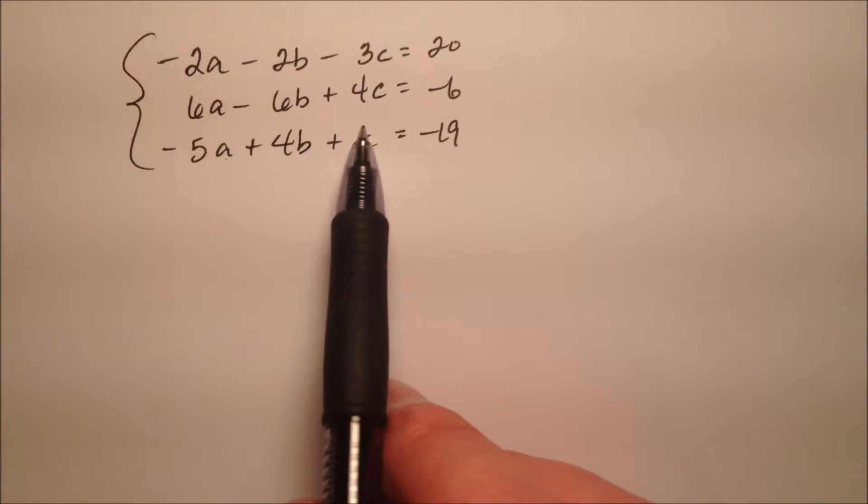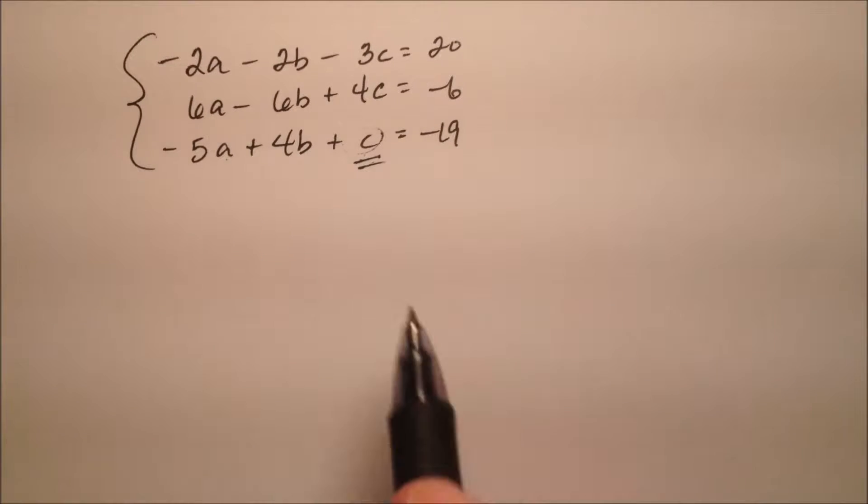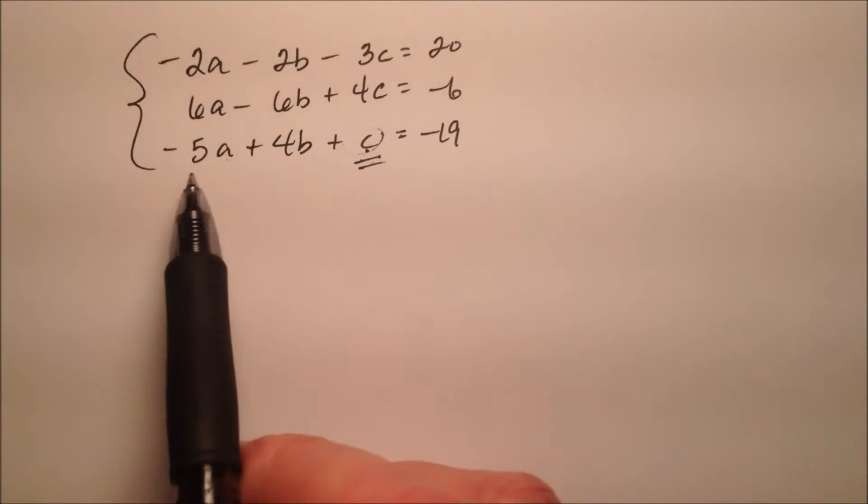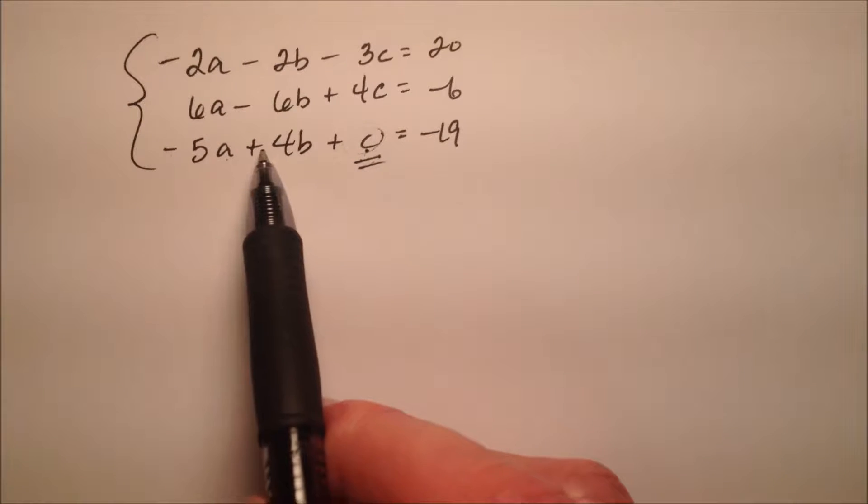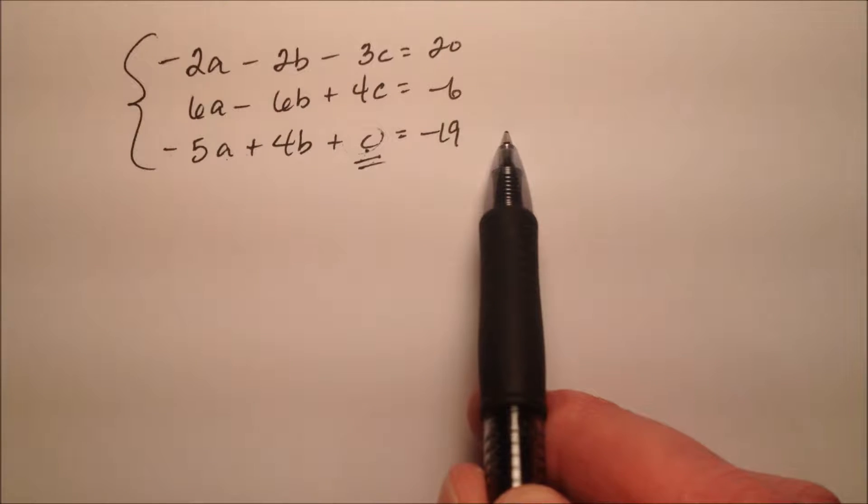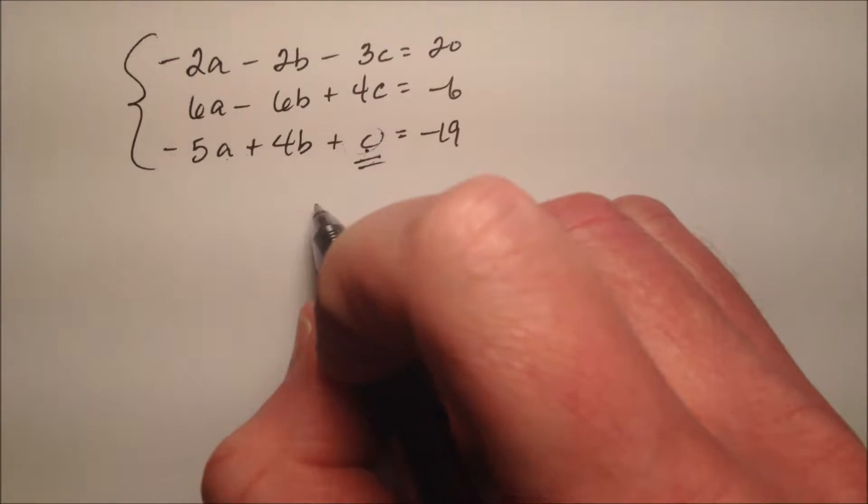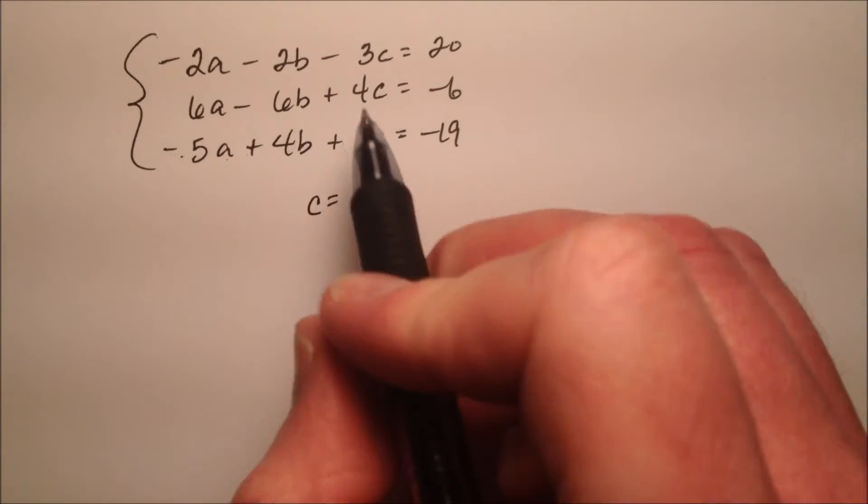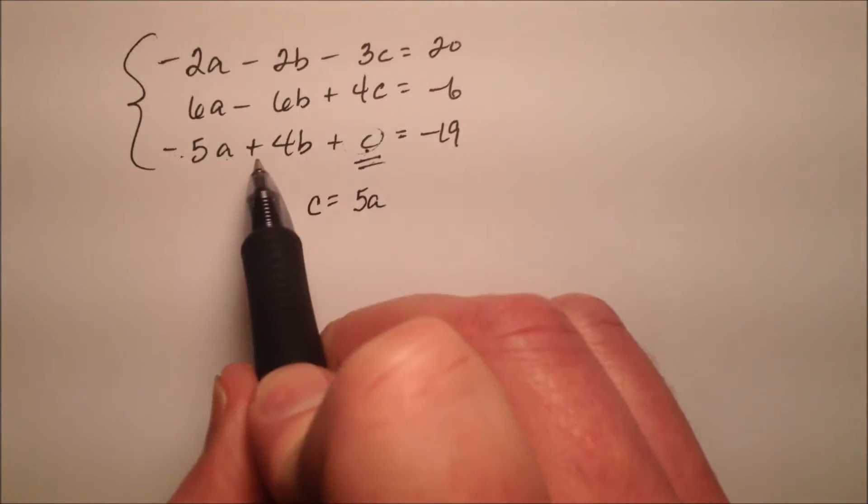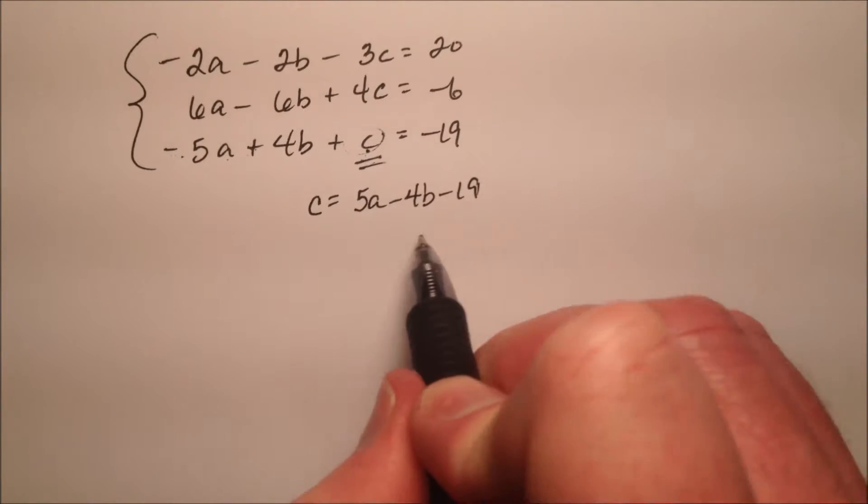So I notice that my c down here looks like it's almost by itself, so let's go ahead and solve for this c and then use substitution. So when I solve for this c, I'm going to take this negative 5a and this positive 4b, and I'm going to dump them on the right side of the equation, and I can do that as long as I change their signs. So this c will equal positive 5a minus 4b and then minus 19.